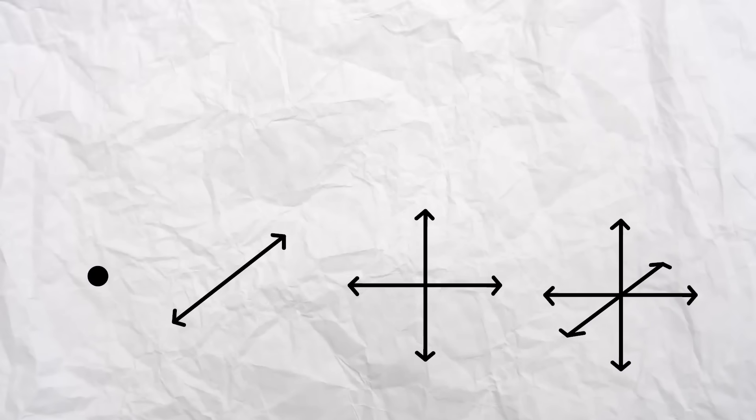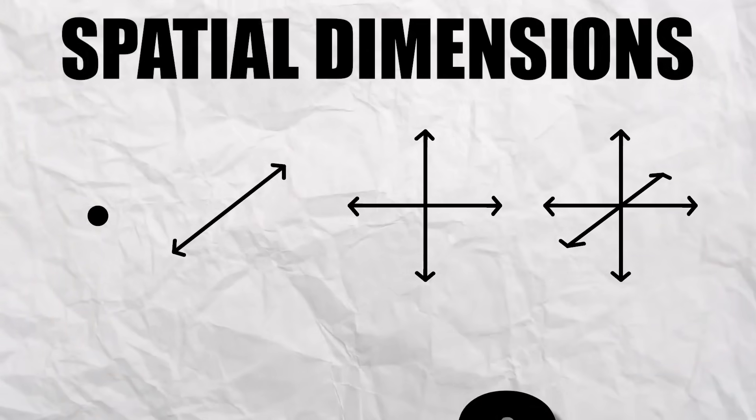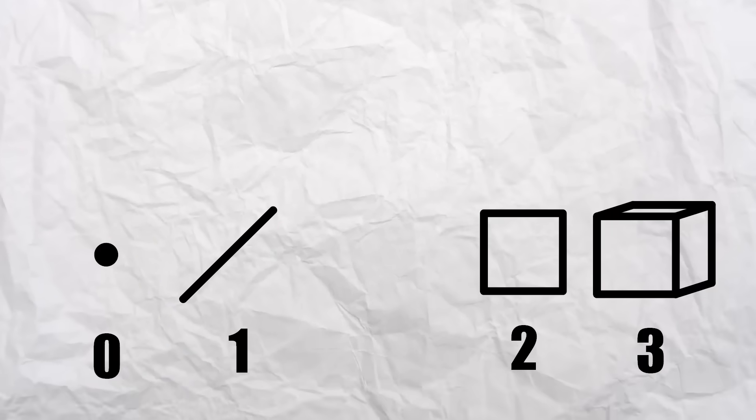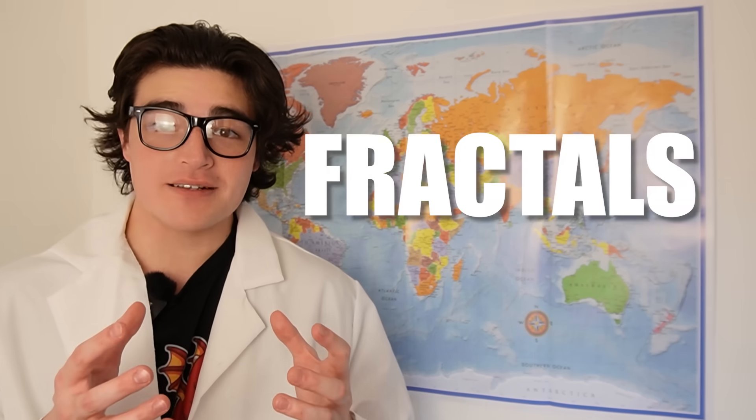From the moment you're a child, you're introduced to the idea of spatial dimensions. A dot has zero dimensions, a line has one dimension, a plane has two dimensions, and a cube has three. But what goes in between? Well, in between each of these numbers lie beautiful objects known as fractals.